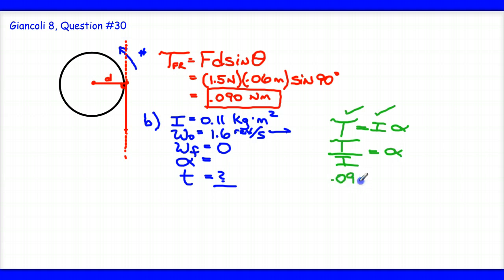So we'll get 0.09 Newton meters divided by the 0.11 value. And this is kilogram meters squared. And that will be equal to our angular acceleration. So now we have this value 0.82 radians per second squared.